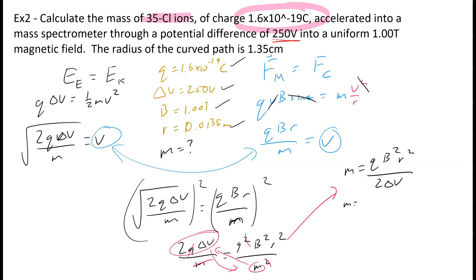So we've got our four things, so we're going to just plug in. So 1.6 times 10 to the negative 19, 1 squared, 0.0135 squared, over 2 times 250.